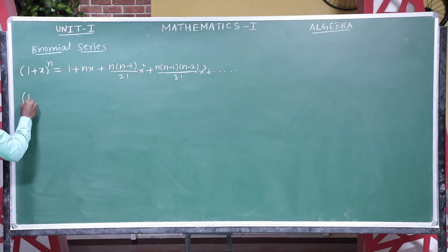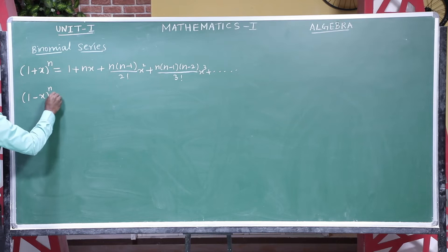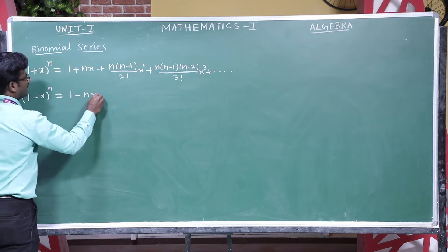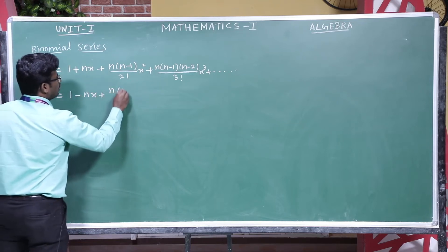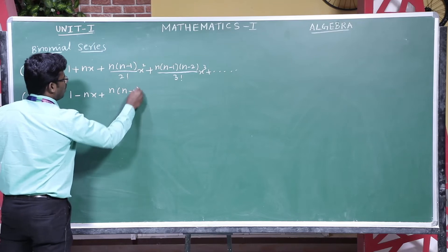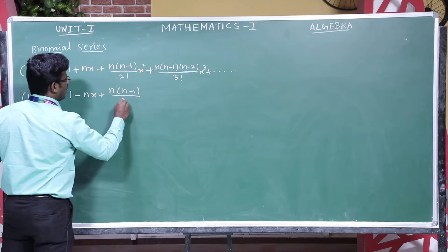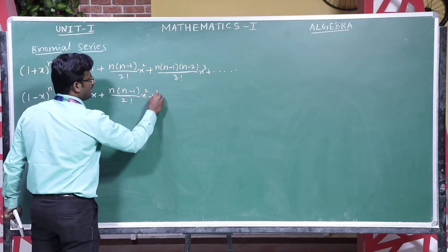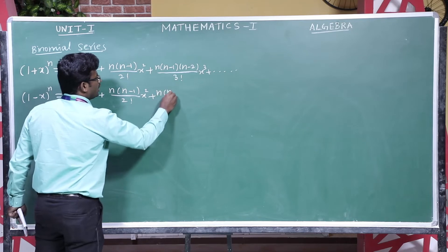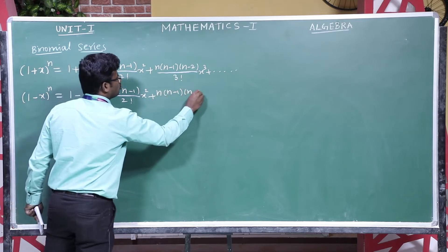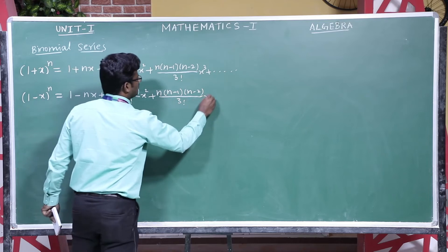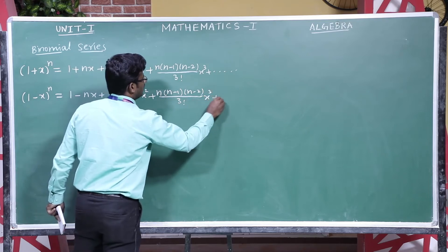Then (1 − x) whole to the power n equals 1 minus nx plus n(n−1) divided by 2 factorial times x squared, plus n(n−1)(n−2) divided by 3 factorial times x cubed, and so on.